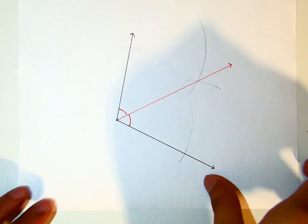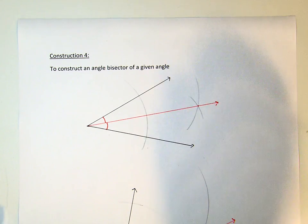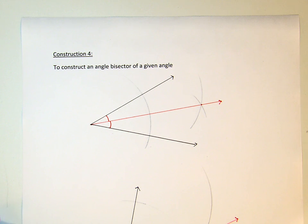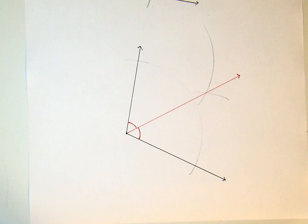Now, this is construction 4, which is to construct an angle bisector of a given angle. Here I gave you two given angles: first one is an acute angle, the other one is an obtuse angle. The principle will be the same.